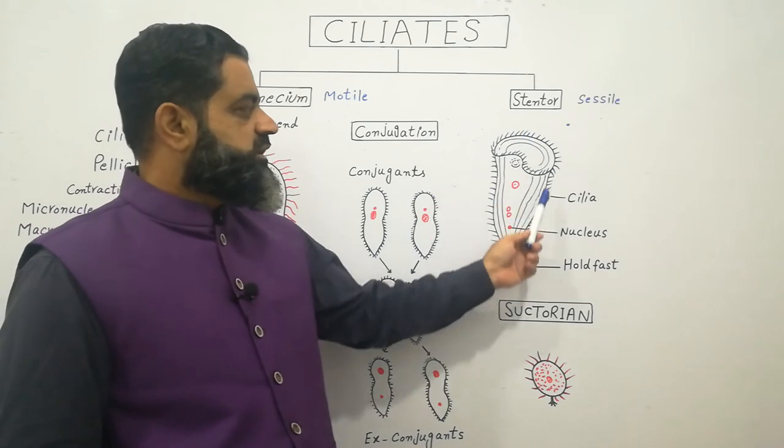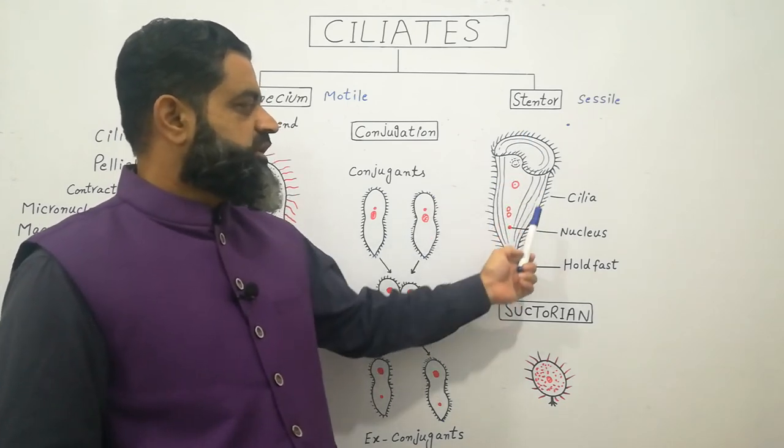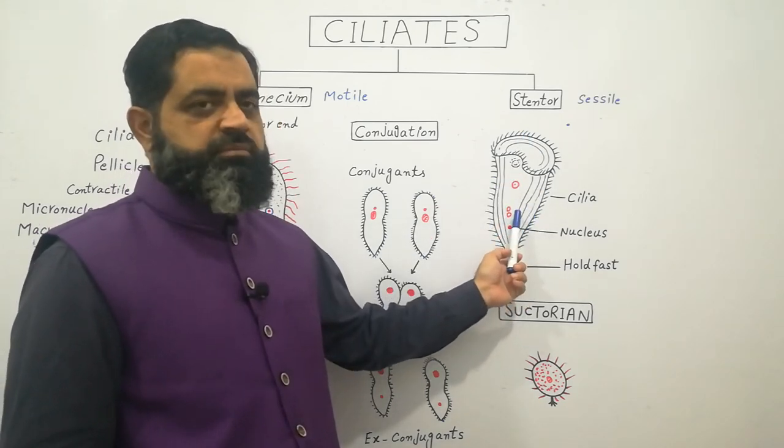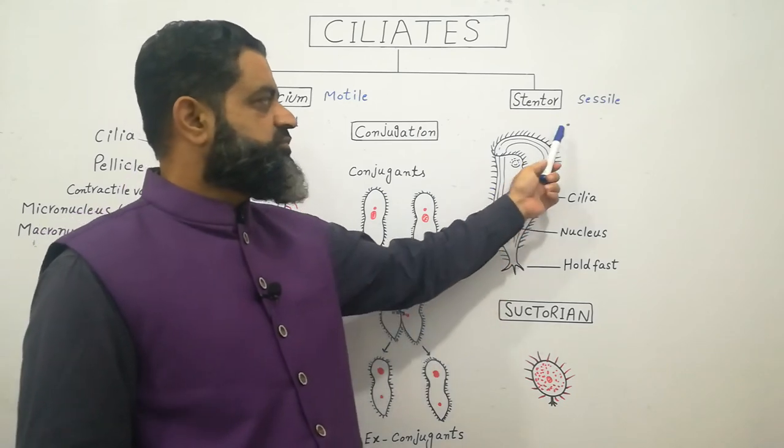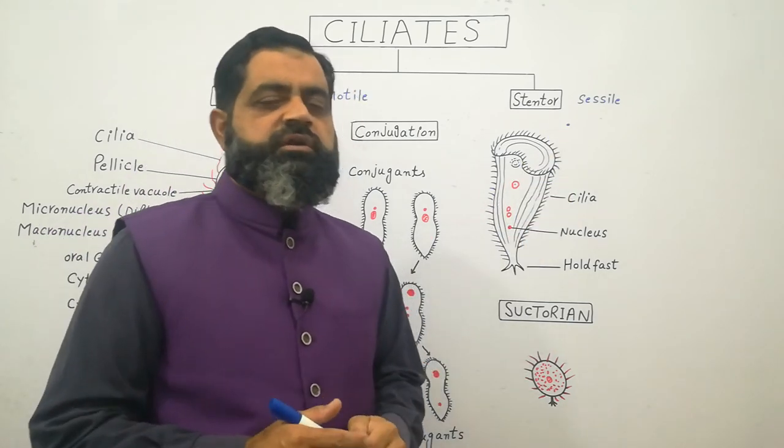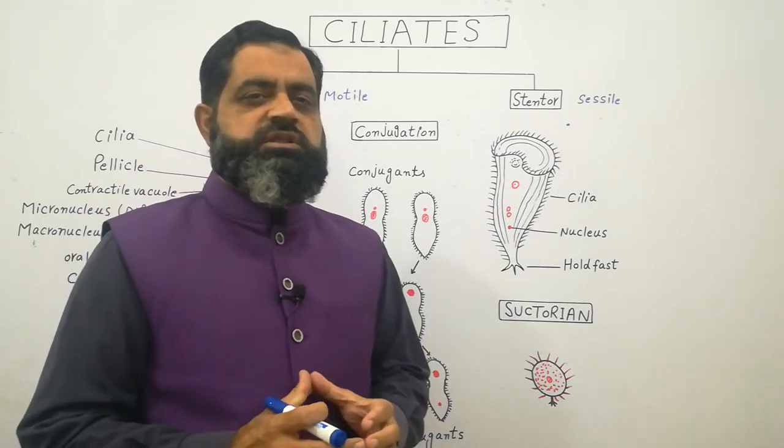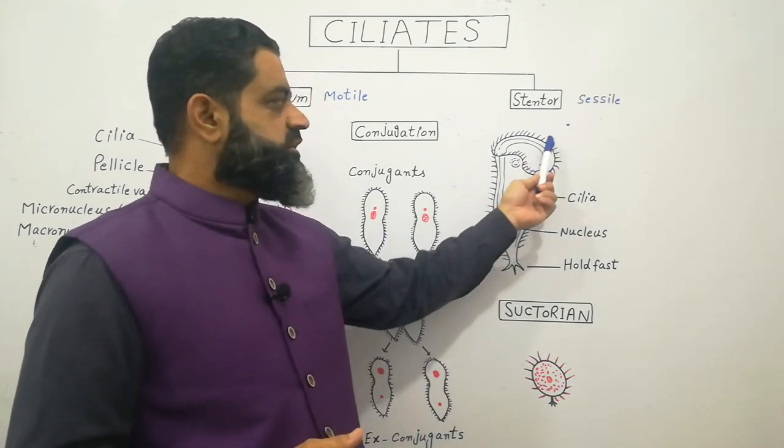This is the cell of the stentor. It has many cilia on its body. It has micronucleus, micro and macronucleus. When they see a food particle like bacteria or detritus organic matter, their cilia beat and attract it towards its body.